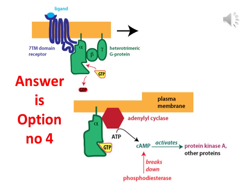GPCRs have seven transmembrane alpha helices, and the G protein contains alpha, beta, and gamma subunits. The G protein gets activated by G alpha binding to GTP. According to option four, the 'on' state of the alpha subunit binds to beta and gamma subunits — but this is not the case. In reality, the alpha subunit separates from beta and gamma, and binds to adenylate cyclase to activate it. So the correct answer is option four.